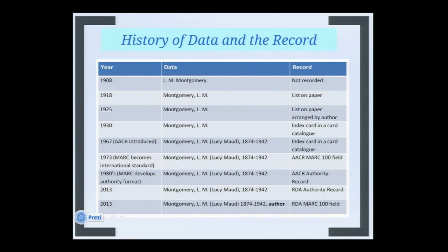The record might have been just in the librarian's head or on the shelf to browse. It would then have developed into a list of items on paper, then a list arranged by author updated every year or two, then index cards and card catalogs. In the 1970s we moved to the MARC record format, so that information would have been in the 100 field. We developed authority records, and then moved from AACR2 to RDA. The data is about description; the record is the physical format.